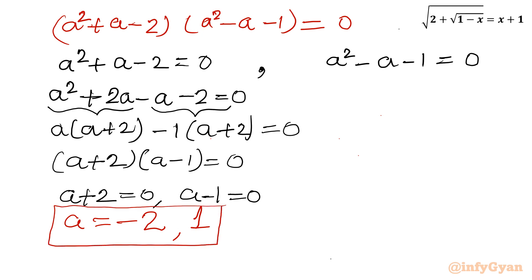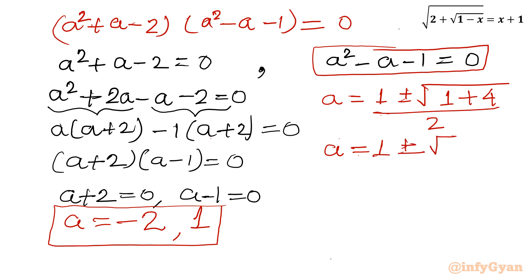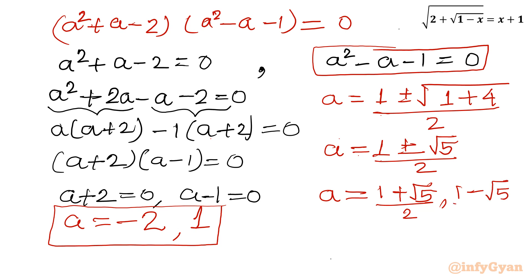For the second quadratic a squared minus a minus 1 equals 0, I use the quadratic formula: a equals (minus b plus or minus square root of (b squared minus 4ac)) divided by 2a. Here b equals minus 1, so: a equals (1 plus or minus square root of (1 plus 4)) divided by 2, which gives a equals (1 plus or minus square root 5) over 2. So the two values are (1 plus root 5) over 2 and (1 minus root 5) over 2.